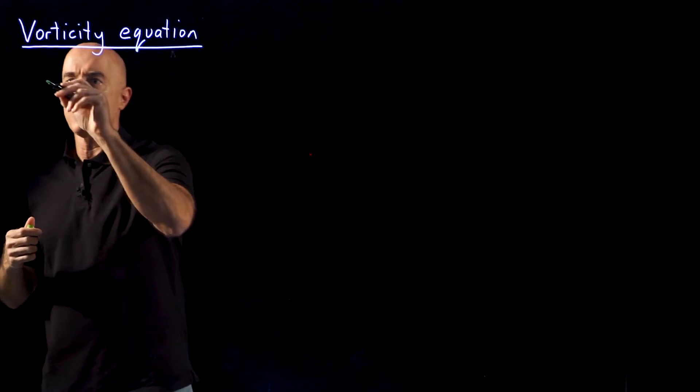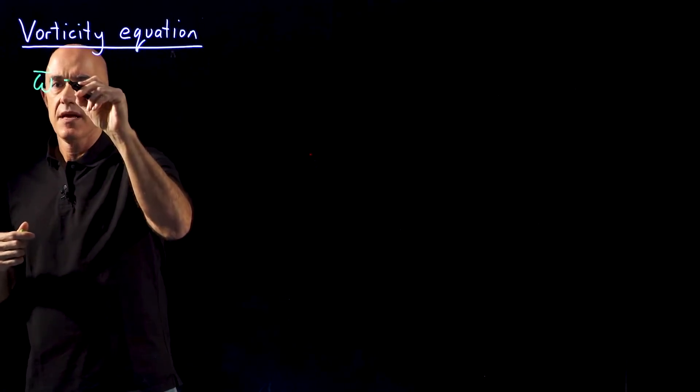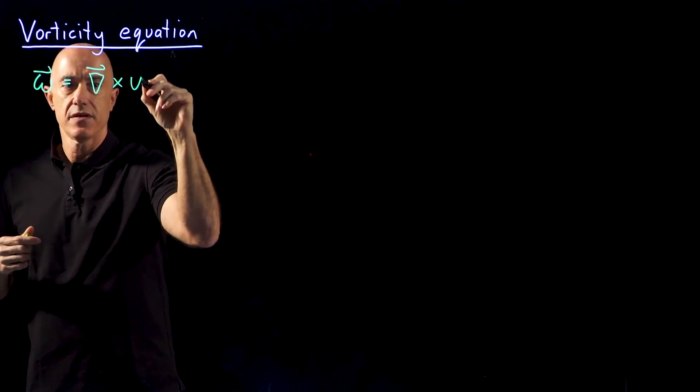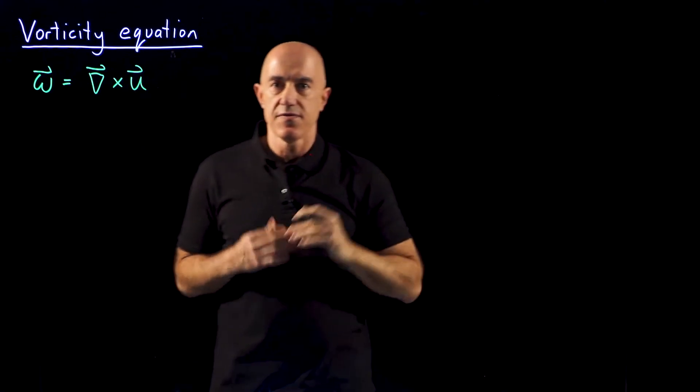So we define the vorticity, we call it omega, which is a vector, as the curl of the velocity field. So del cross the velocity field.